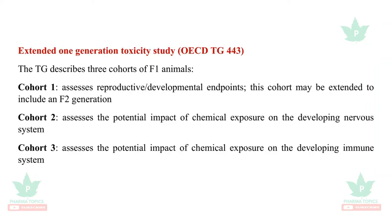Reproduction development toxicity study, guideline 421: females should be dosed throughout the study; males are dosed for a minimum period of four weeks. Observations include the mating period, post-mating period, and estrus cycle. Offspring are checked for the presence of anomalies. Offspring parameters are recorded from day 0 of pregnancy: number of pups, stillbirths, live births, and runts (pups significantly smaller than corresponding control pups). The extended one-generation toxicity study, guideline 443, is a cohort study having three cohort studies of F1 and F2 generations.